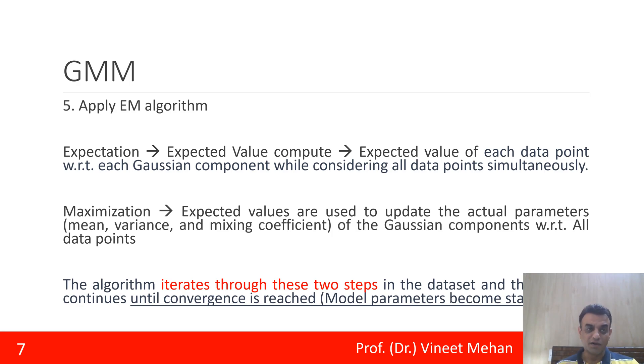The algorithm iterates these in these two steps and it continues till convergence is reached. What is convergence? Convergence means the model parameters are stabilized and our model is now made consistent. So this is what is meant by convergence.